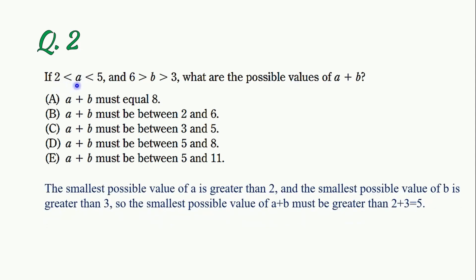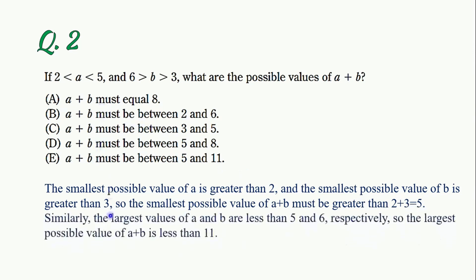For the minimum value: a is greater than 2 and b is greater than 3, so a plus b is greater than 5. For the maximum value: a is less than 5 and b is less than 6, so a plus b is less than 11. Therefore the possible range of a plus b is 5 to 11.